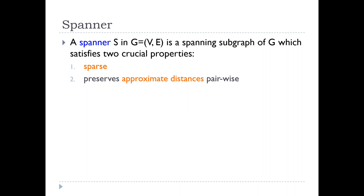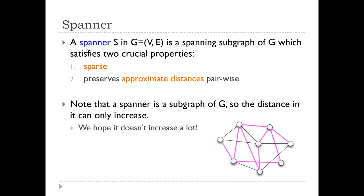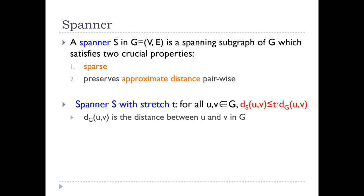A spanner S in graph G is a spanning subgraph of G satisfying two crucial properties: it is sparse, and it preserves approximate distances pairwise. Note that a spanner is a subgraph of G, so the distance in it can only increase, but we hope it doesn't increase a lot. A spanner S with stretch T means that for every pair of vertices U and V in G, the distance in S is at most T times the distance in the original graph G.